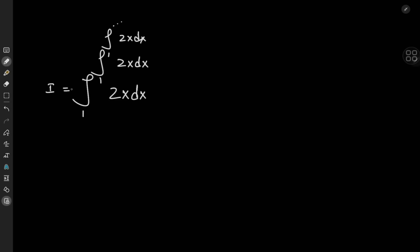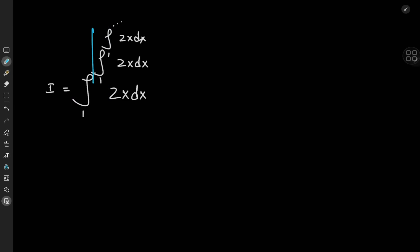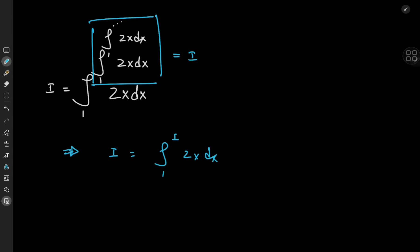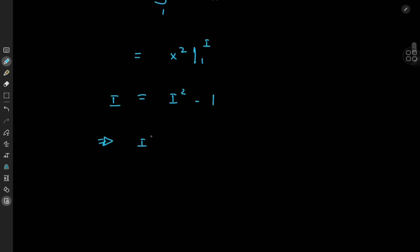We're going to call the integral i. That means we have the integral of 2x from 1 to this infinite stack integral, which is the integral i. So we can write i as the integral from 1 to i of 2x dx. This is pretty easy to solve: 2x on integration gives us x squared, with the limits being 1 and i, so we have i squared minus 1 equal to i, which implies i squared minus i minus 1 equals 0.